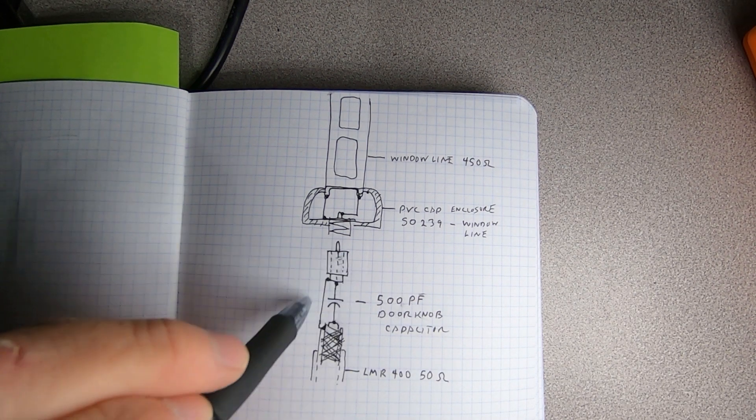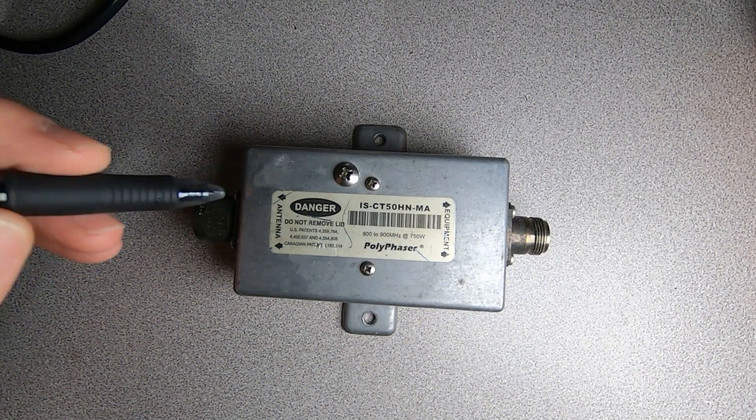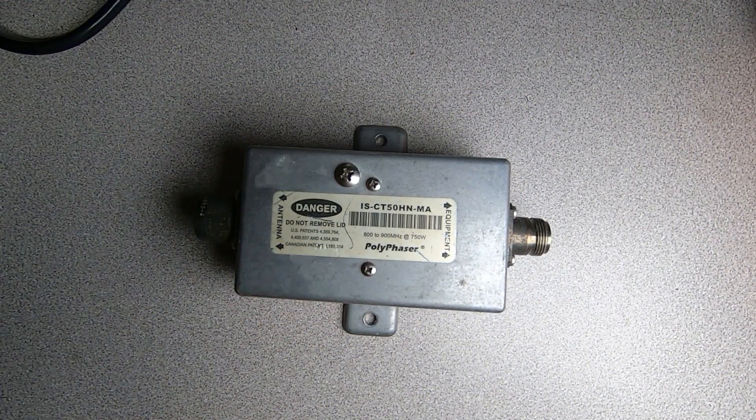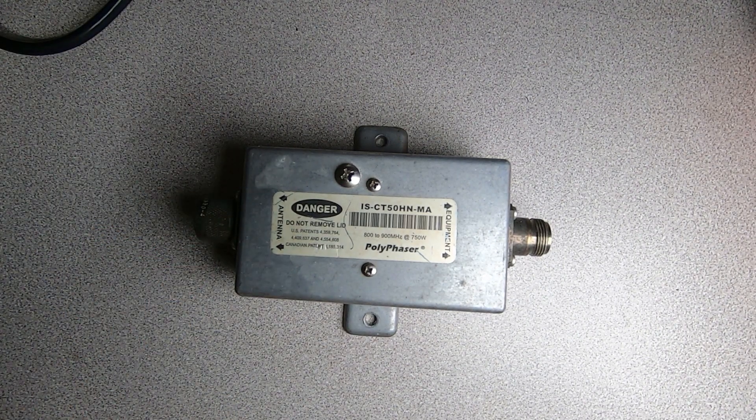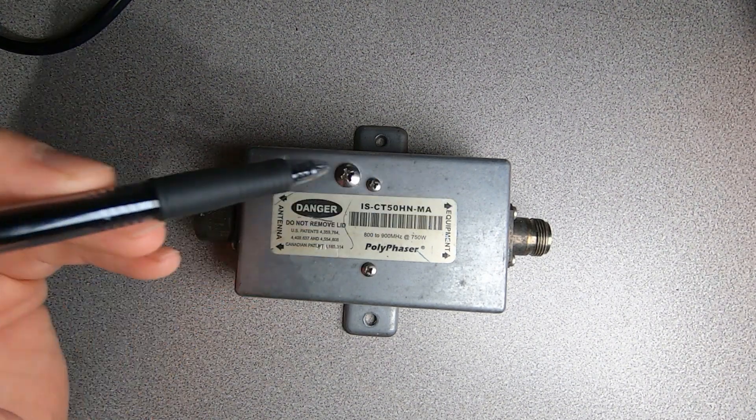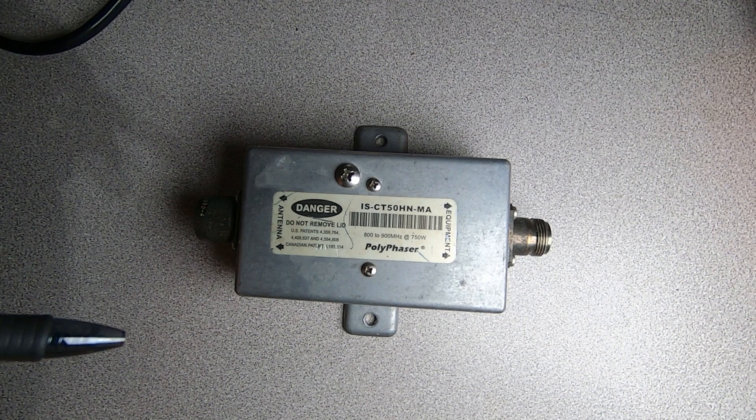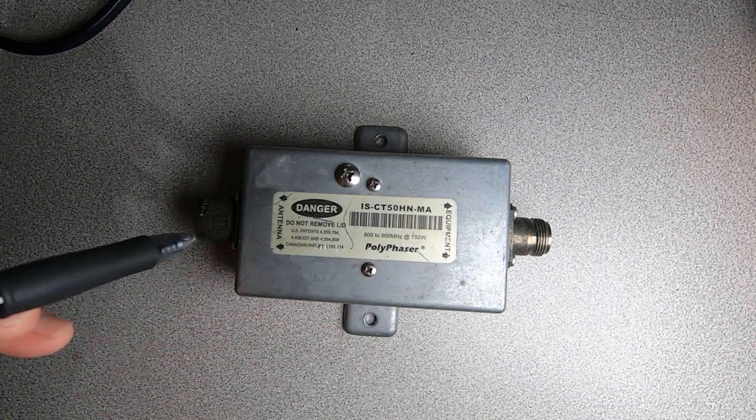Let me talk about how we're going to build this enclosure here and make it robust enough. So this is what we're going to use for our enclosure here and this is nothing more than a legacy 800-900 megahertz impulse suppressor from PolyPhaser. These things can be had for five to ten dollars a piece on eBay and they make excellent enclosures for these kind of projects.